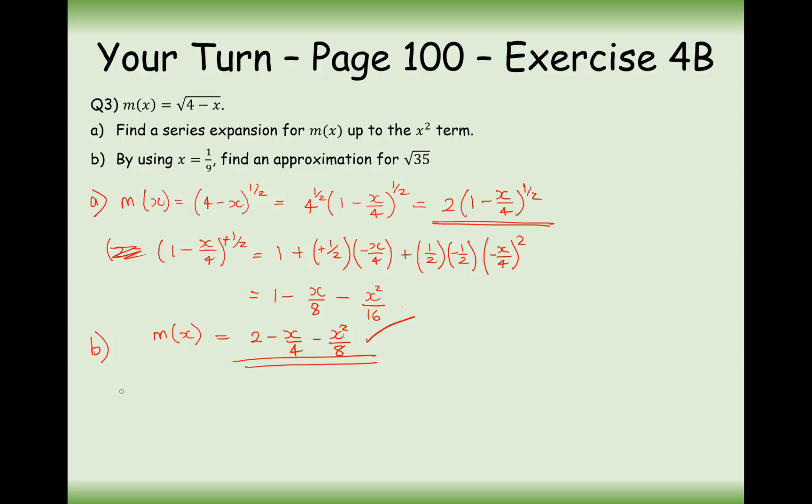Part b now asks us to substitute in x equals 1 over 9 to find an approximation for root 35. So finding m of 1 ninth, let's start off with 4 minus a ninth. 4 minus a ninth will give us 35 over 9, so that's going to be root 35 over 3. I see how that's going to work.